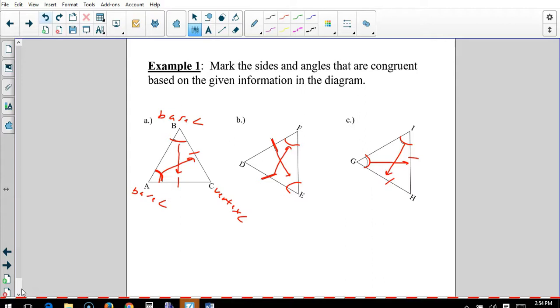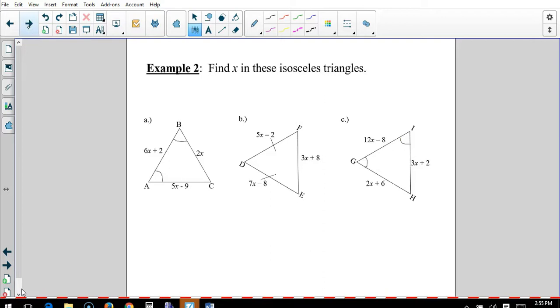Now, again, you can go around and label base angles and vertex angles. So, you see, the two matching ones are my base angles. And the other one, the odd one out, is my vertex angle. And the two legs that are matching, the two sides that are matching, are my legs. The third side is the base.